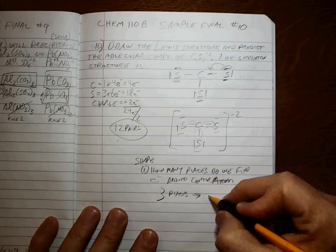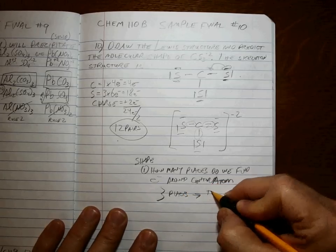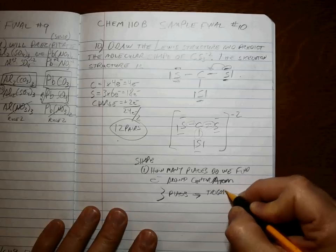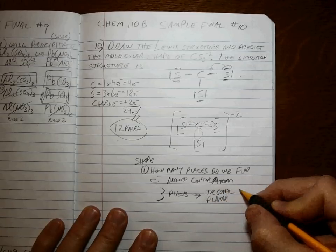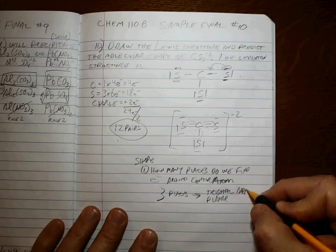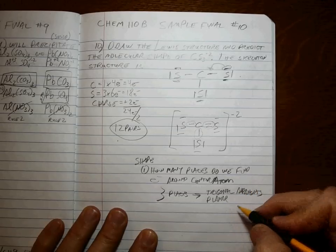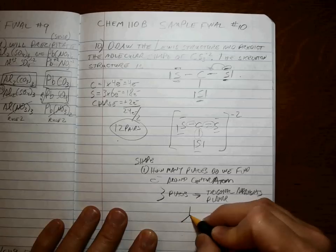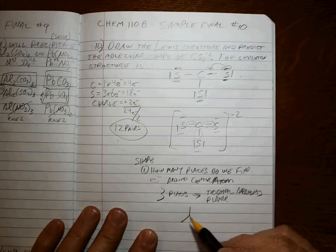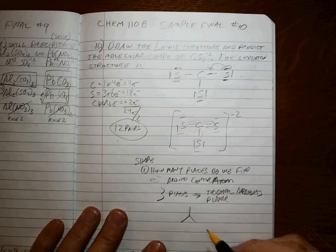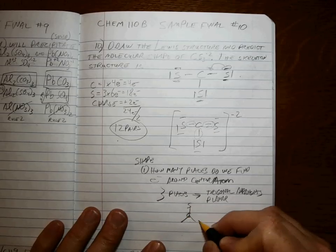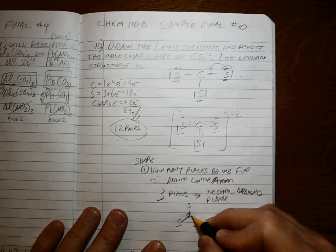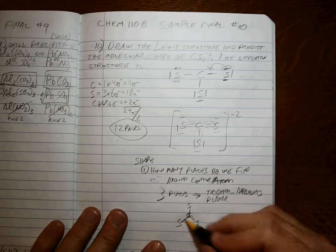Three places will spread out in a trigonal planar arrangement or geometry. Alright? Three things split up like this. 120 degrees around. Alright? So we've got the carbon in the middle and a sulfur and a sulfur and a sulfur. It doesn't matter that there's a double bond. But it's still that.